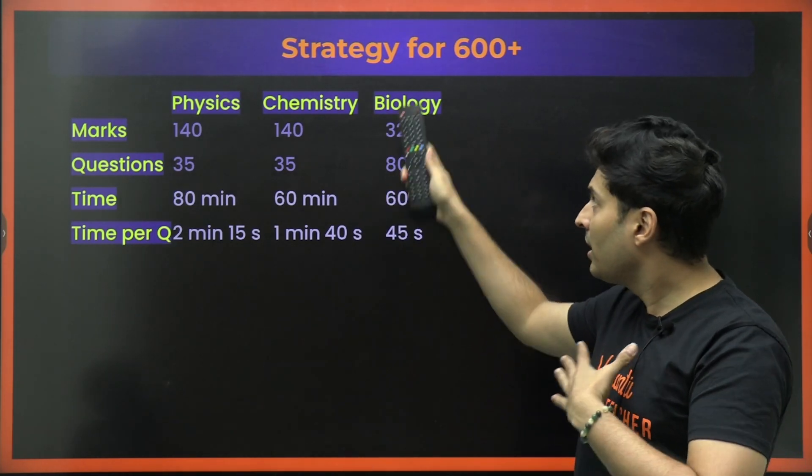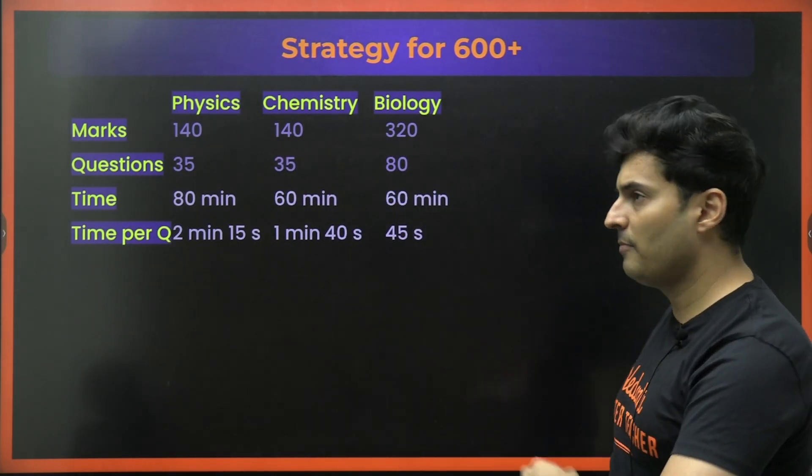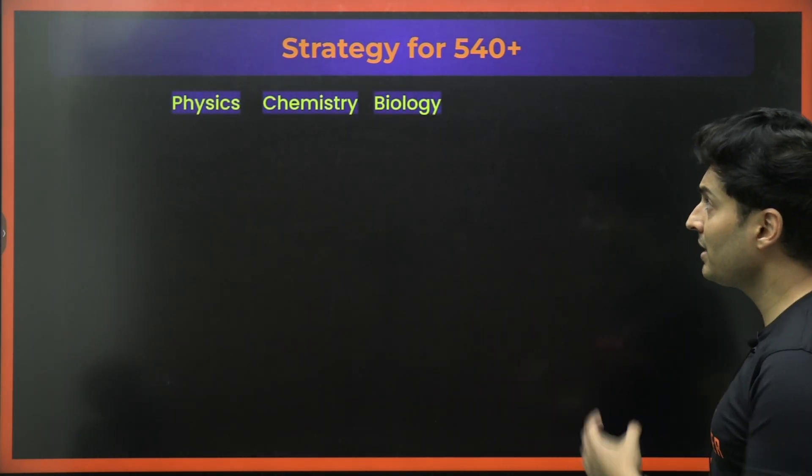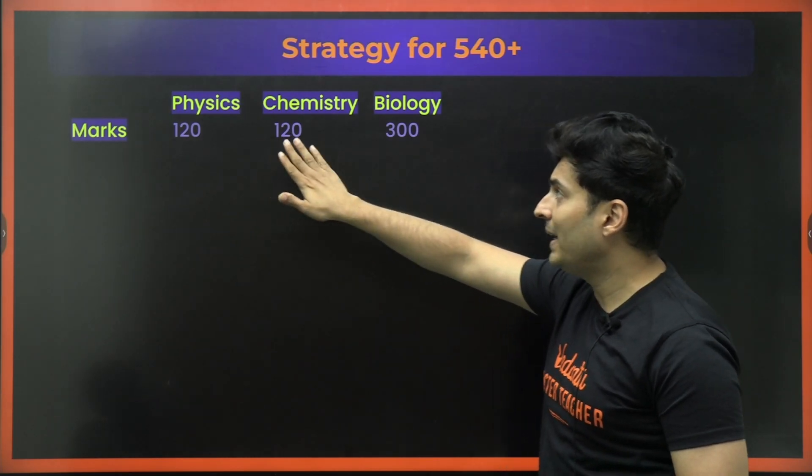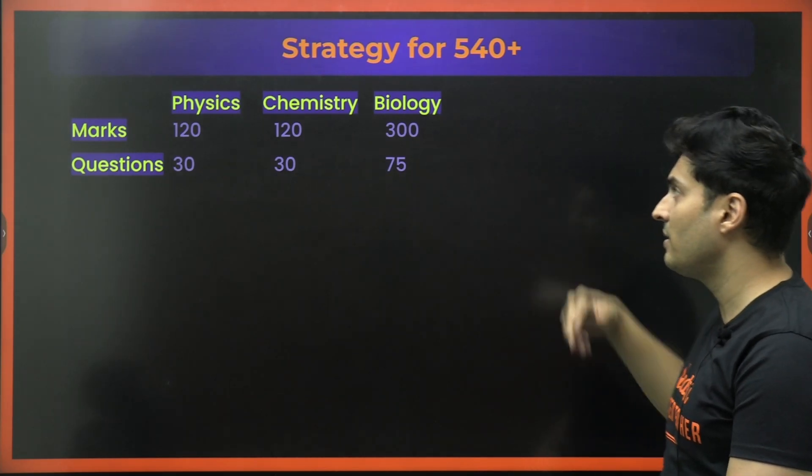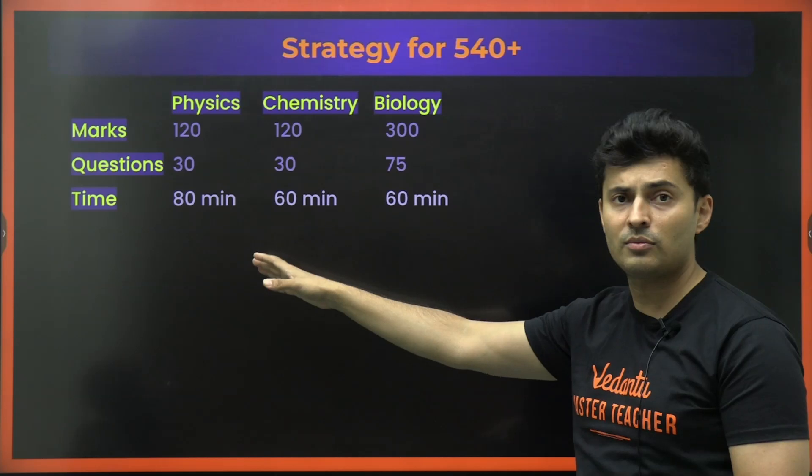Some of you might be like sir, is there a strategy or a calculation table for slightly lower marks? Well, I have made that also. In case you are getting very bad marks in the mock test, at least you can target 540 marks. So in physics 120, chemistry 120, biology 300. So 30 questions in physics, 30 questions in chemistry and 75 in biology which I feel is pretty realistic and doable even in the last one month.